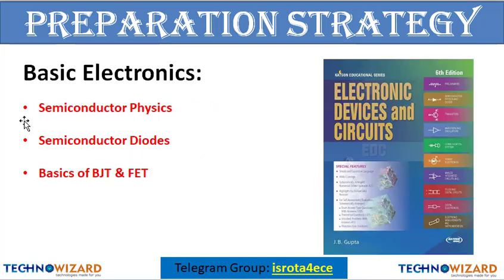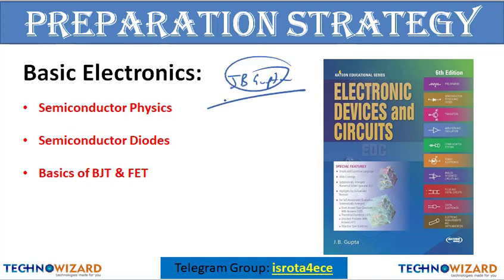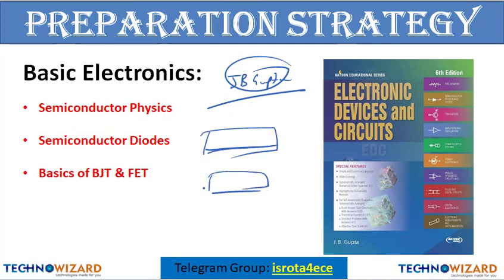Next is basic electronics and analog electronics. For basic and analog electronics, you can refer JB Gupta — it is the best book. You can understand each and every concept in a very detailed manner, and you can tell me if you have any doubt in a concept and I will make videos on that as well.